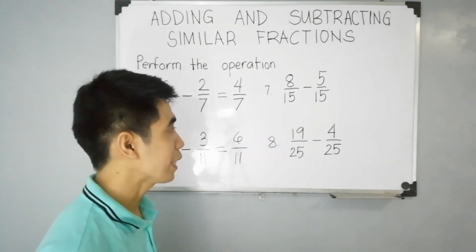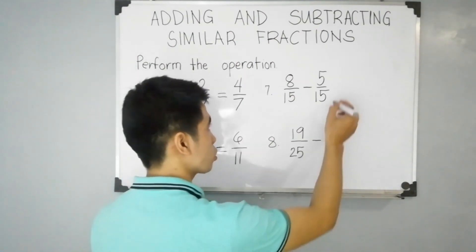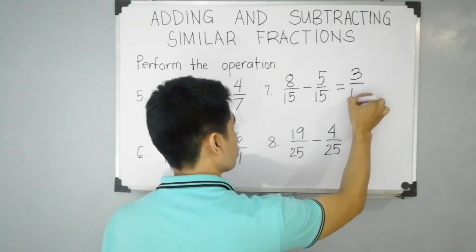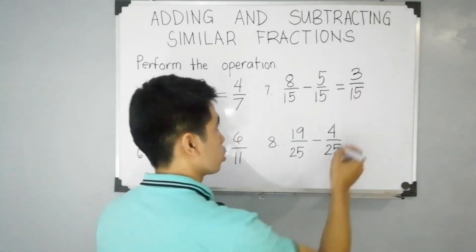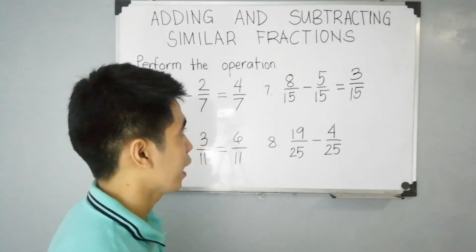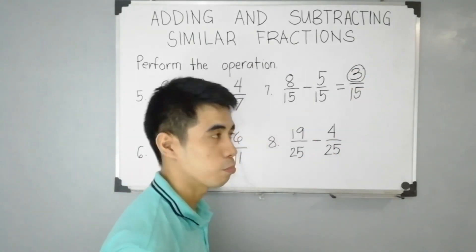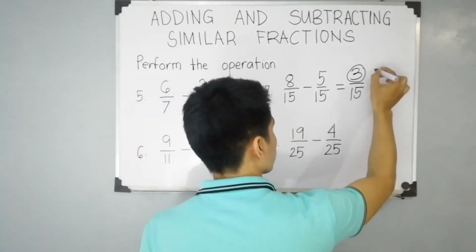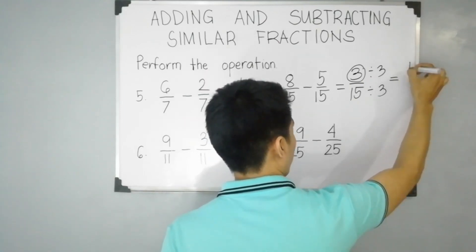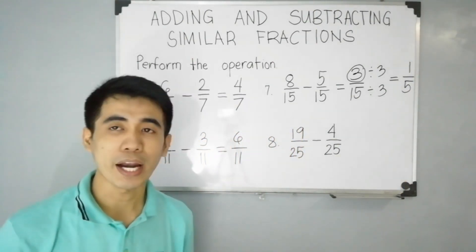For item number 7: 8 over 15 minus 5 over 15. Same process — we have to subtract the numerators. 8 minus 5 is equal to 3. And then we have to copy the denominator since they have the same denominators. Analyze if 3 over 15 can be simplified. Yes, since 15 is divisible by 3. Therefore 3 is our GCF. We have to divide both numerator and denominator by 3. 3 divided by 3 is 1, and 15 divided by 3 is 5. Therefore our final answer is 1 over 5.